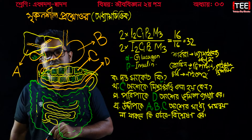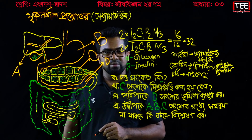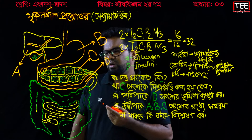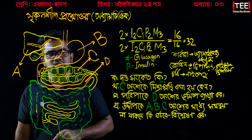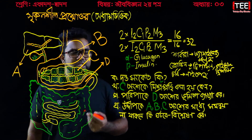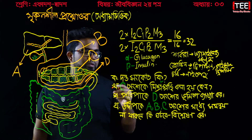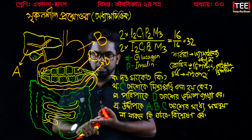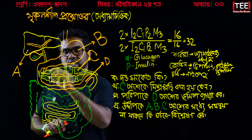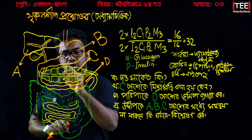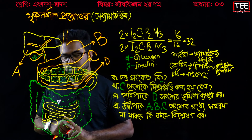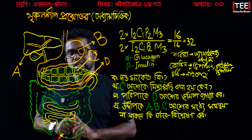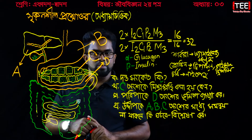The small intestine produces amino peptides, di-peptides, proteases. And lipase — LEPA, lecithines, colasines, phospholipase.